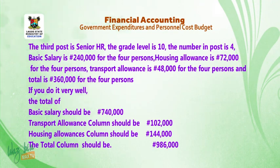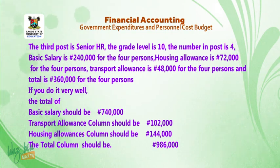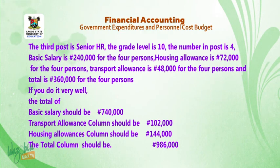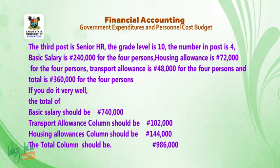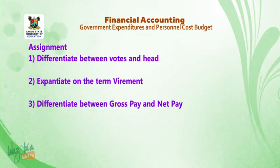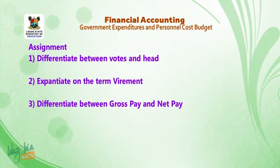If done correctly, the total of the basic salary column should be ₦740,000; the transport allowance column should be ₦102,000; the housing allowance column should be ₦144,000; and the total column should be ₦986,000. This is where we stop for today. Assignment: one, differentiate between votes and head; two, expand on the term virement; three, differentiate between gross pay and net pay. Thank you for listening.